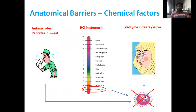Chemical factors also act as anatomical barriers. Antimicrobial peptides in sweat can cleave microbes, along with enzymes that break down microbial cell walls. The second chemical factor is acid in the stomach — gastric acid has high acidity so no microbes can grow or survive in that environment. The third is lysozyme in tears and saliva, which is an enzyme that cleaves bonds in the microbial cell wall, thus destroying microorganisms.